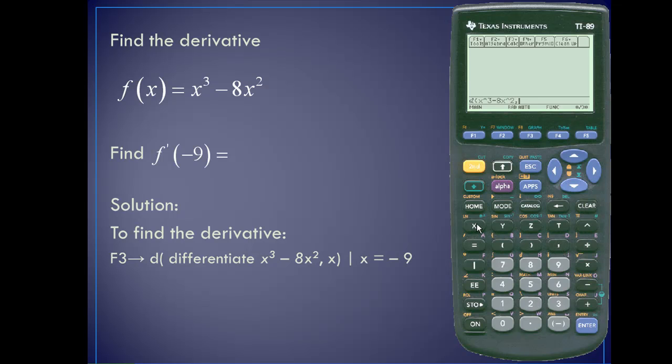The variable of our expression is x. I'll close off the function as before. This time, I'm going to insert the vertical bar, and I'm going to let x equal to negative 9. And now I'll simply press enter, and it gives us a value of 387.